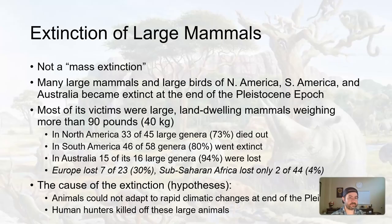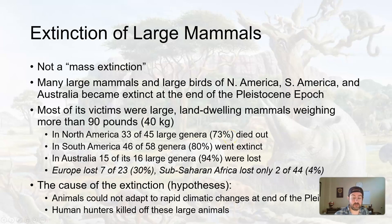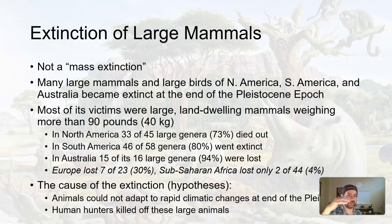These are the things that are dying off. This extinction of large mammals is not a mass extinction as we've defined it in the past, but many large mammals and birds of North and South America and Australia go extinct. Victims were often land-dwelling mammals weighing 90 pounds or more. In North America, 73% of large animal genera died out; 80% in South America; 94% in Australia — markedly different from Europe at only 30%, and sub-Saharan Africa at only 4%. That's why Africa still has so many big organisms like elephants and rhinos.